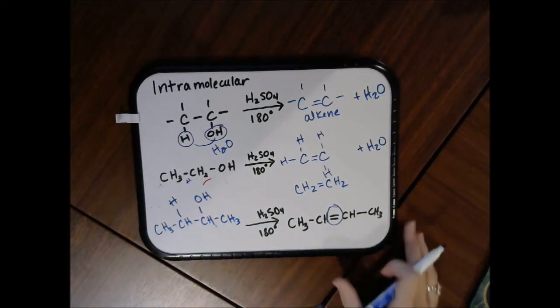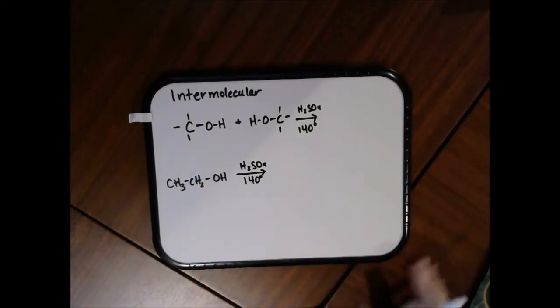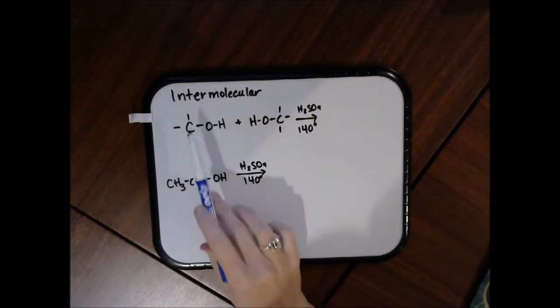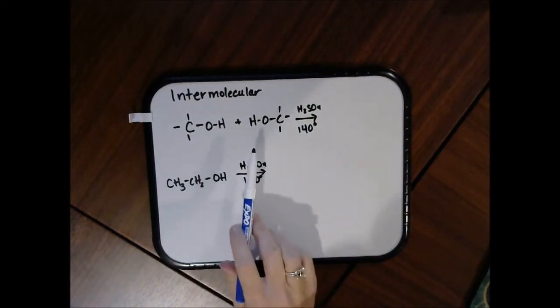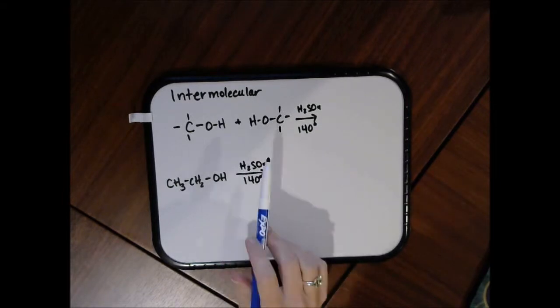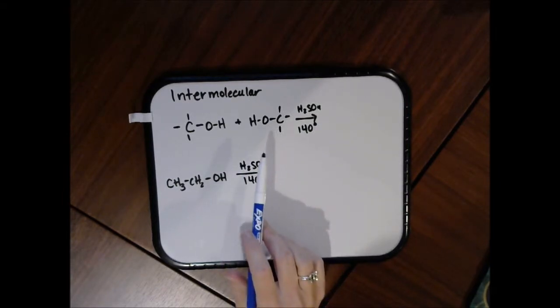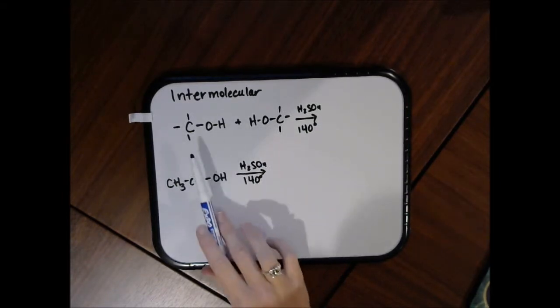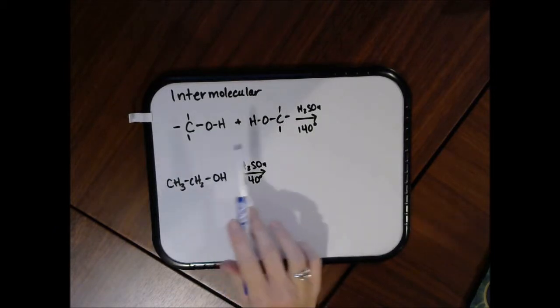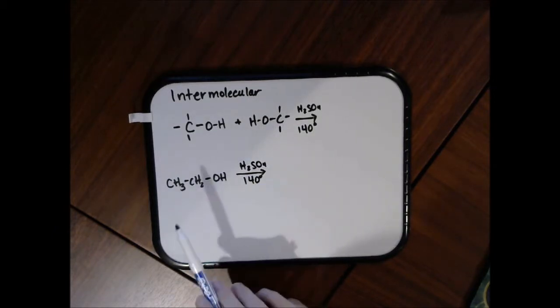I told you there were two types of dehydration. The other was intermolecular dehydration. Intermolecular means two different molecules. So in this case, my water molecule that's removed - part of it's going to come from one alcohol molecule and the other part will come from a different alcohol molecule.